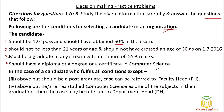So these conditions are what is called Decision Making. To select a candidate, Condition 1: 12th pass with 60 percent. Condition 2: Age should not be less than 21 and not more than 30 as on 1st July 2016. Condition 3: Must be a graduate in any stream with minimum 55 percent marks. Condition 4: Should have a diploma, degree, or certificate in computer science. If a candidate satisfies all four conditions, they will be selected.